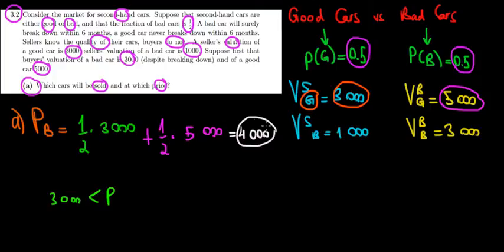Because that is the maximum willingness to pay of the buyers, so it can be at most 4,000 euros, then we are going to sell the good cars. There's going to be trade, sell the good cars.